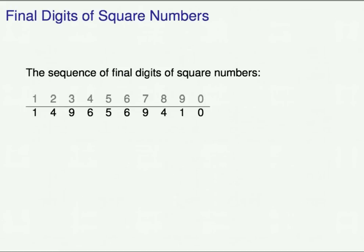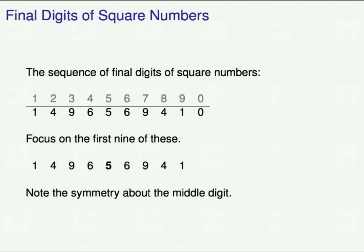Here is the sequence of final digits of square numbers in black. For each gray digit, if you have a number ending in that digit and you square it, you get a number ending in the black digit below it. We're going to focus on the first 9 of these — all of them except 0. The first 9 are 1, 4, 9, 6, 5, 6, 9, 4, 1. You might notice a symmetry about 5: if you go 1 to the left of 5, you see the same digit as if you go 1 to the right of 5, and so on.